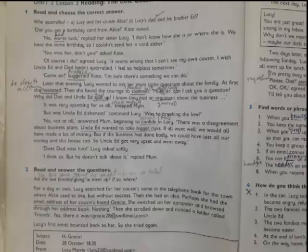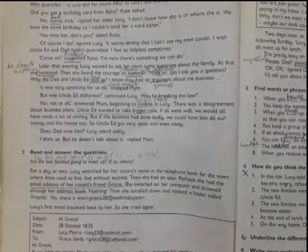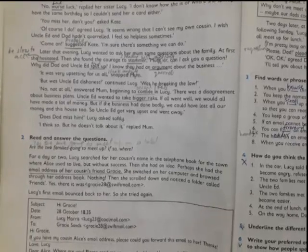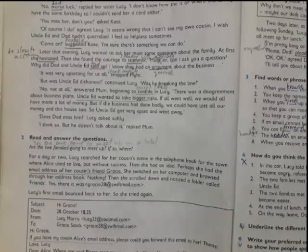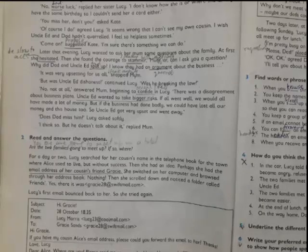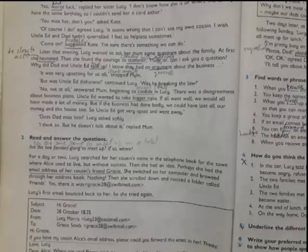So students, it is a conversation between two sisters Lucy and Cat. They're talking about their cousin Alice. From the text we can comprehend that there was a kind of quarrel between these girls' father and their Uncle Ed. I'm going to read the next paragraph. Later that evening, Lucy wanted to ask her mom some questions about the family. At first she was hesitant - hesitant means when you are too slow to act.